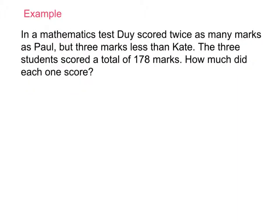This is a harder one — the trickiest one. Step one: read carefully and pull out the important facts. In a mathematics test, Dew scored twice as many marks as Paul, but three marks less than Kate. Paul is our base — he's X. Dew scored twice as many marks as Paul, so Dew scored 2X.